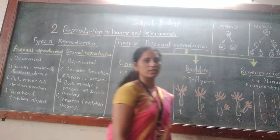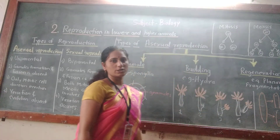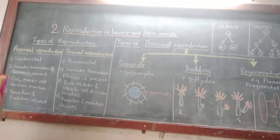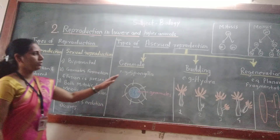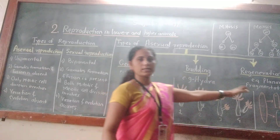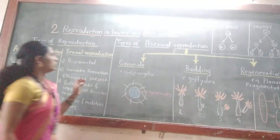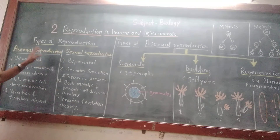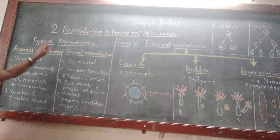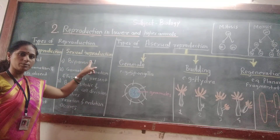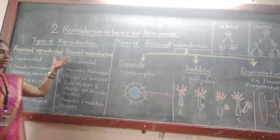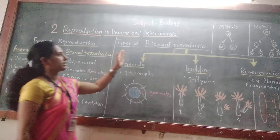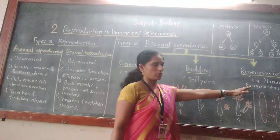This is one example of regeneration, a type of asexual reproduction. So these are the three types of asexual reproduction: gemmule formation, budding, and regeneration. Today we have completed the types of reproduction — asexual and sexual — the differences between them, and the various types of asexual reproduction.